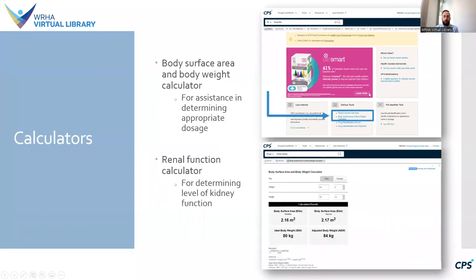Another set of useful tools are the renal function and body surface area and body weight calculators. Links can be found in the clinical tools box on the homepage or under the Tools tab. The body surface area and body weight calculator assists with determining the correct dosage for an individual based on their sex, weight, and height. The renal function calculator can be used to estimate renal function in adults.